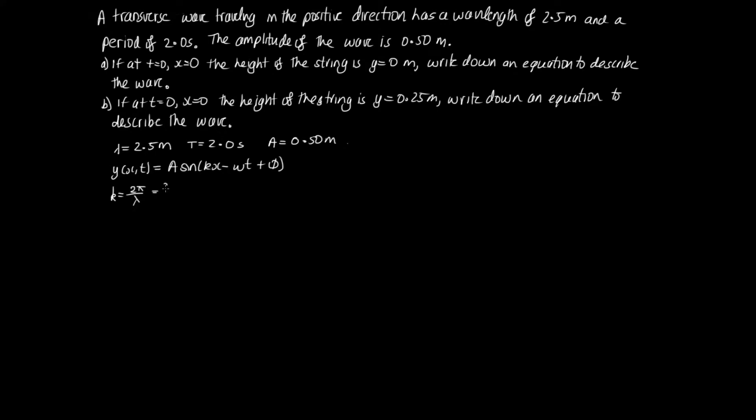So to work out k, we know that k is equal to 2 pi over lambda. So we've got 2 pi over 2.5 and so we can write this as 2 pi over 2.5 is 5 over 2 and then if we times the top and the bottom both by 2, we end up with 4 pi over 5. So that's our value for k. If you wanted, you could evaluate this and just give it as a decimal, but it's quite nice to keep the pi there. So with omega, we've got omega is equal to 2 pi f which is 2 pi over the period. So that's equal to 2 pi on 2. So this is equal to pi.